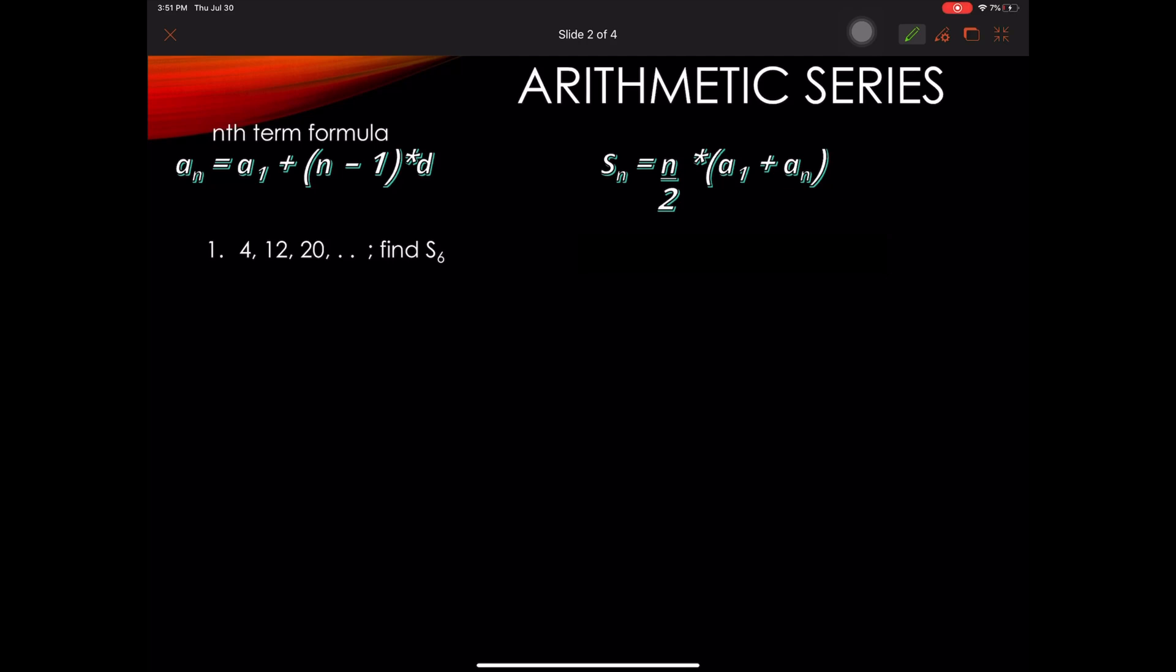So first, we have to find the common difference of this given sequence. We just simply subtract 20 minus 12 gives us an 8. And if we do the same thing with 12 minus 4, we get an 8 as well, meaning our common difference is 8.